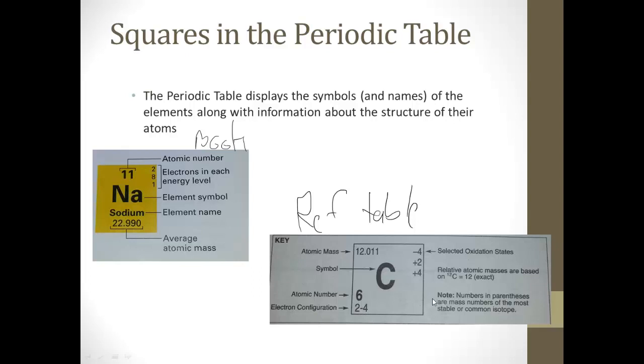Something important noted on the reference table is that when the atomic mass is in parentheses, it's the mass number of the most stable or common isotope. So you can pretty much assume that a lot of those elements don't have a stable isotope.